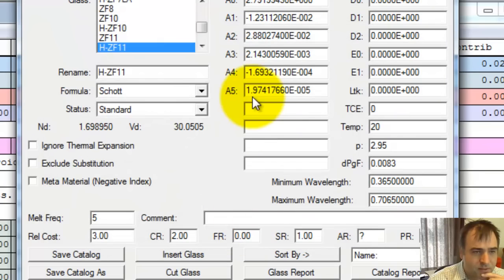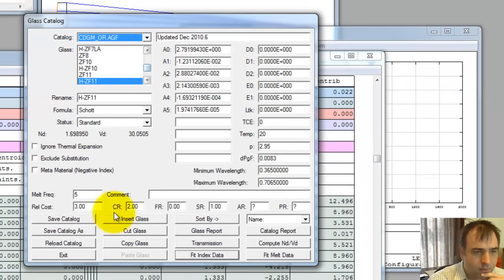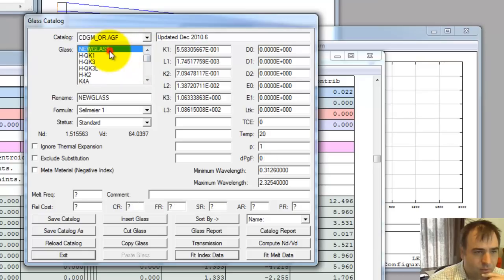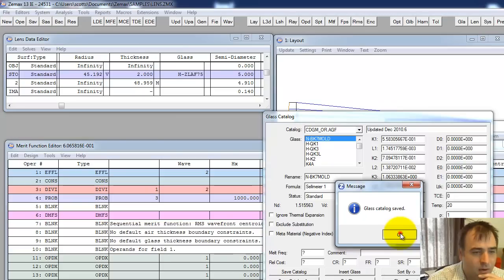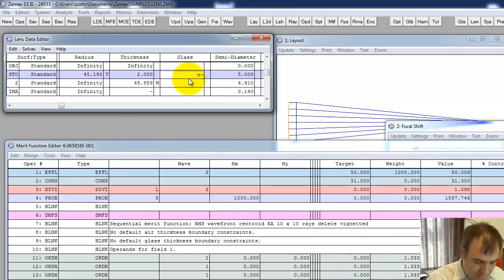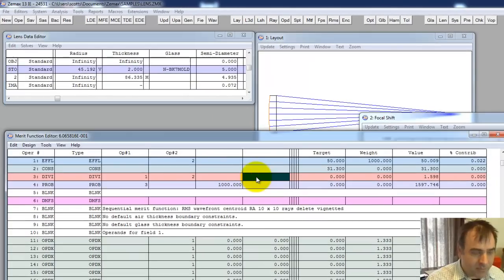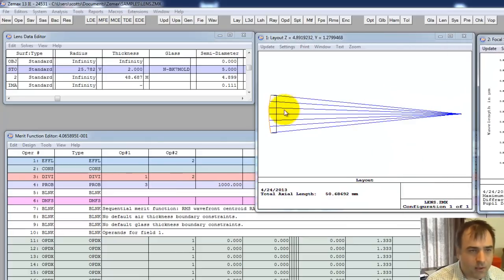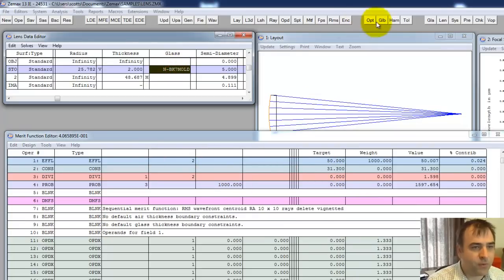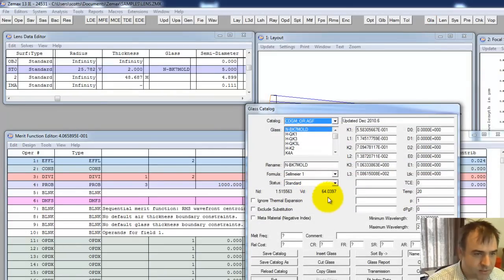New glass. I don't want to call it new glass. Let's change it to N-BK7 mold. It's adjusted the minimum and maximum wavelengths. This is the Sellmeier. Everything looks copacetic. Save catalog. We're going to exit. We're going to change this to N-BK7 mold. I'm just going to re-optimize because the index changes, the focal length is going to change. There's our lens.